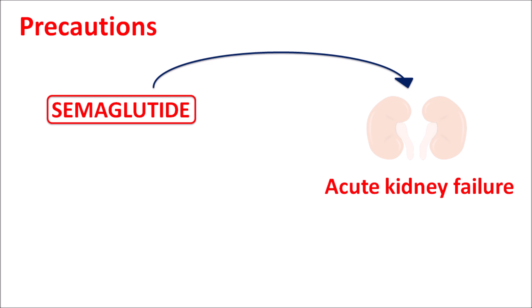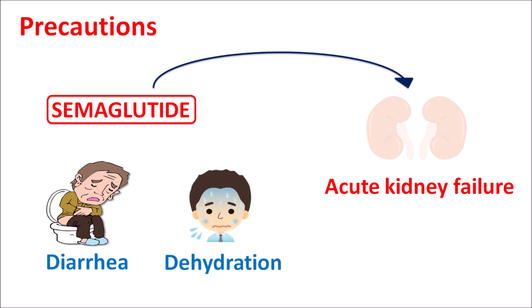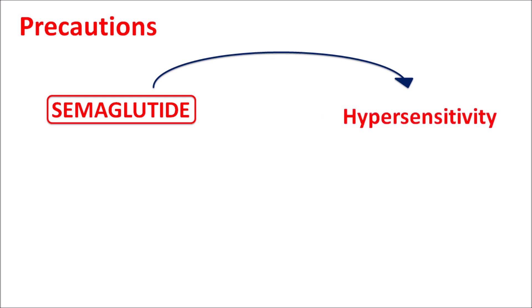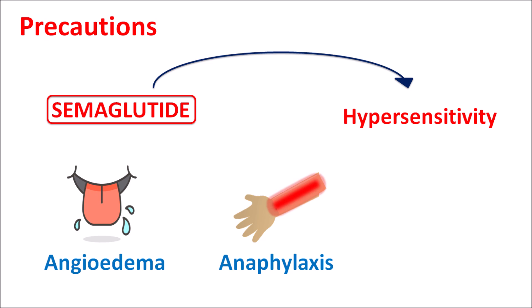An important precaution is that semaglutide can produce acute kidney failure. In patients with chronic renal failure, this drug should be avoided. Due to acute kidney failure, semaglutide may produce symptoms such as severe diarrhea, nausea, vomiting, and dehydration. If any of these symptoms are observed during semaglutide treatment, kidney functionality should be assessed to check for the development of acute kidney failure. Additionally, this drug can produce hypersensitivity reactions including angioedema — swelling of the lips, tongue, face, and neck — and anaphylaxis with skin rashes and urticaria, in which case the drug should be avoided.